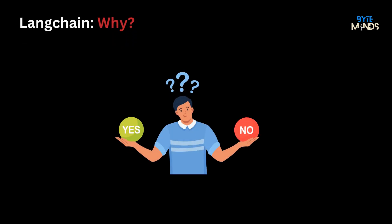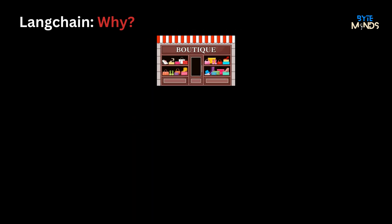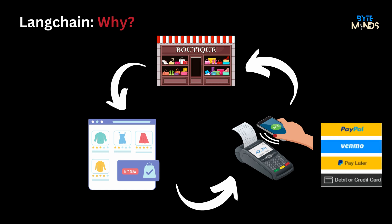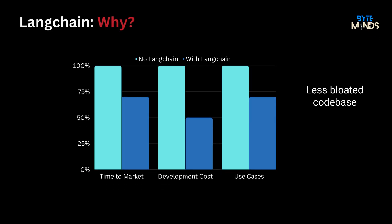But here's the question: why choose LangChain in the first place? Imagine you run a stylish boutique and are taking it online with a website, complete with payment options. Now, would you really start coding the entire payment system from scratch? Probably not. You'd put your faith in experts like PayPal to handle the complex payment procedures, allowing you to focus on your boutique's offerings. Similarly, LangChain is your tool for quickly prototyping and crafting an AI app. It cuts down development costs, fast-tracking time to market, while still supporting a variety of use cases.